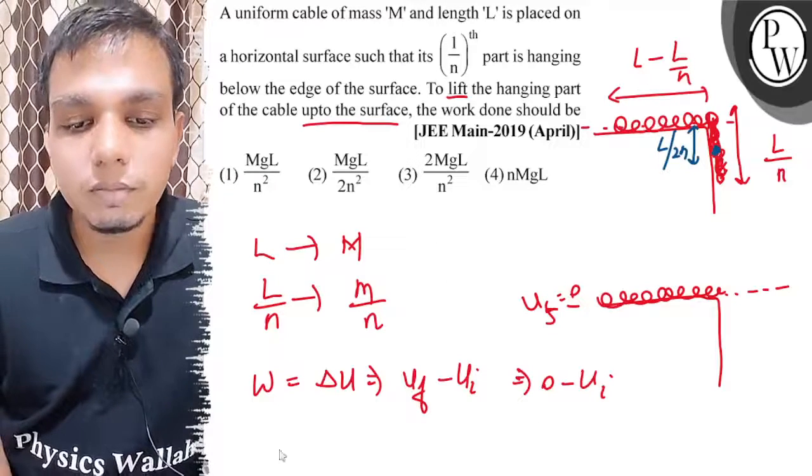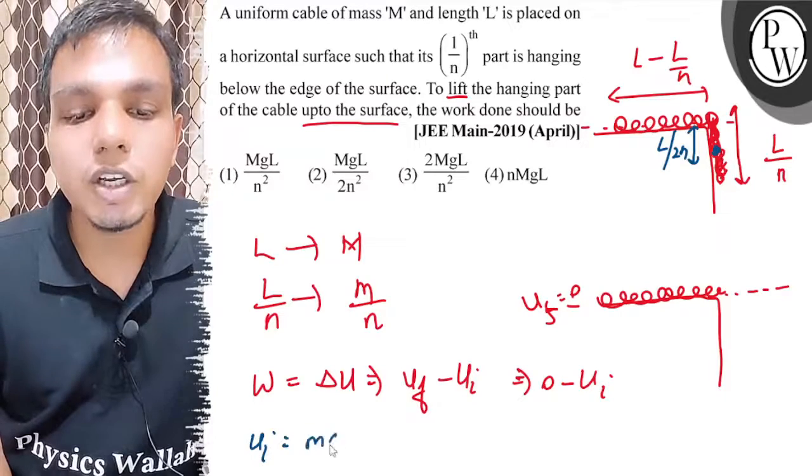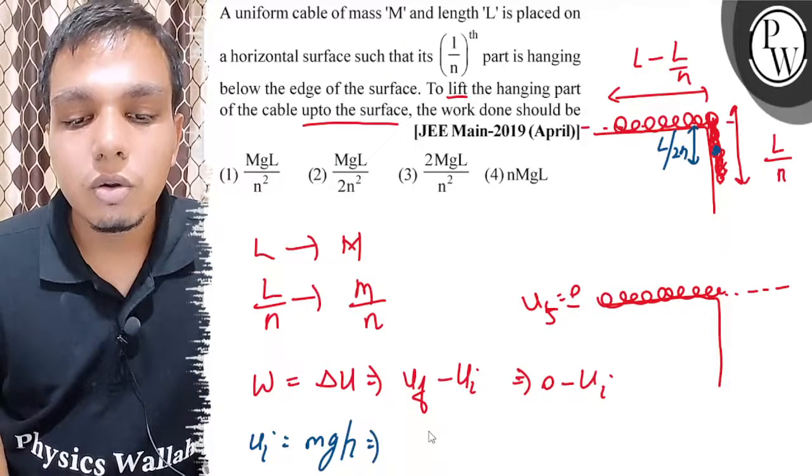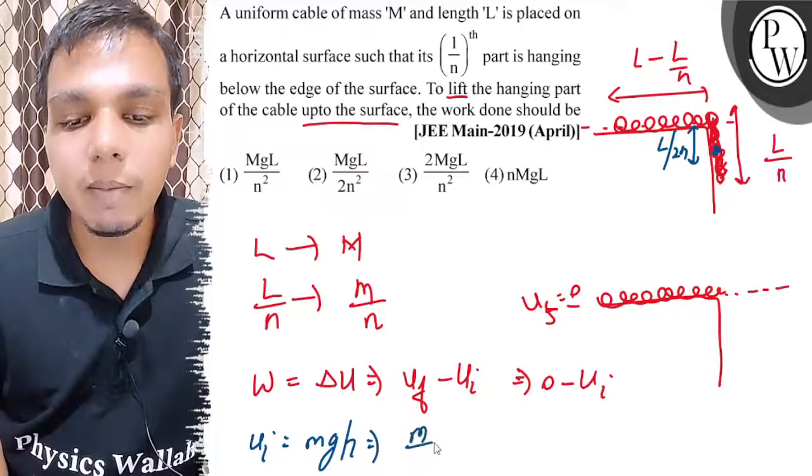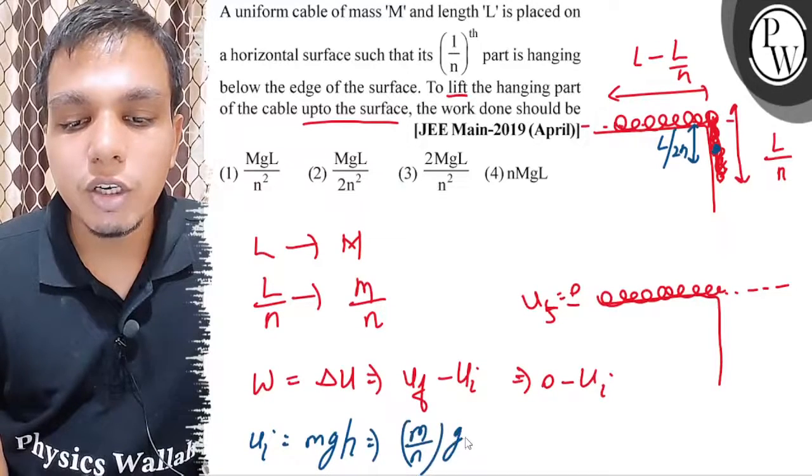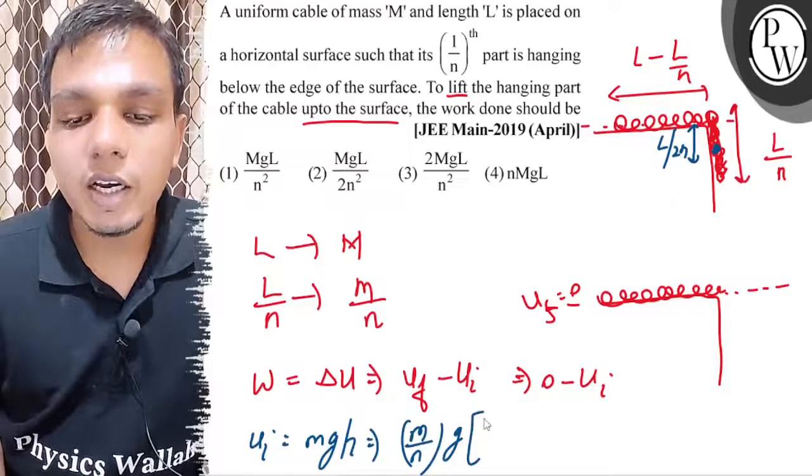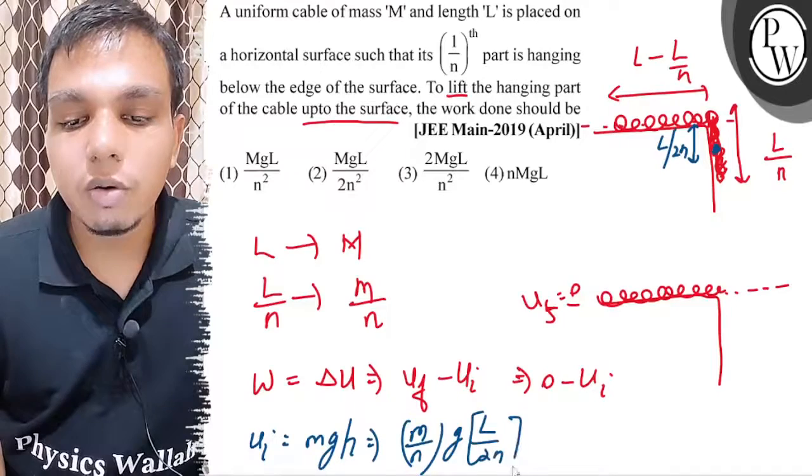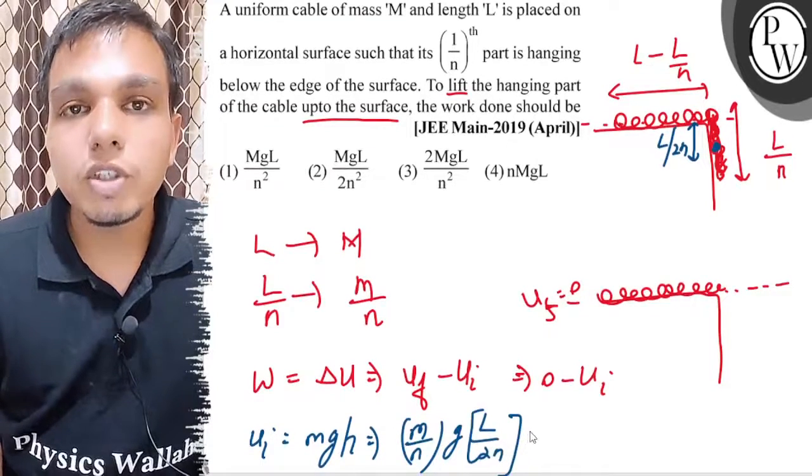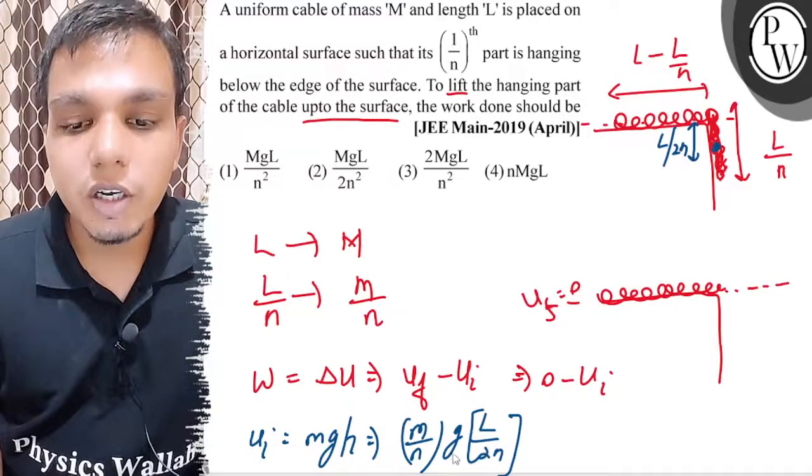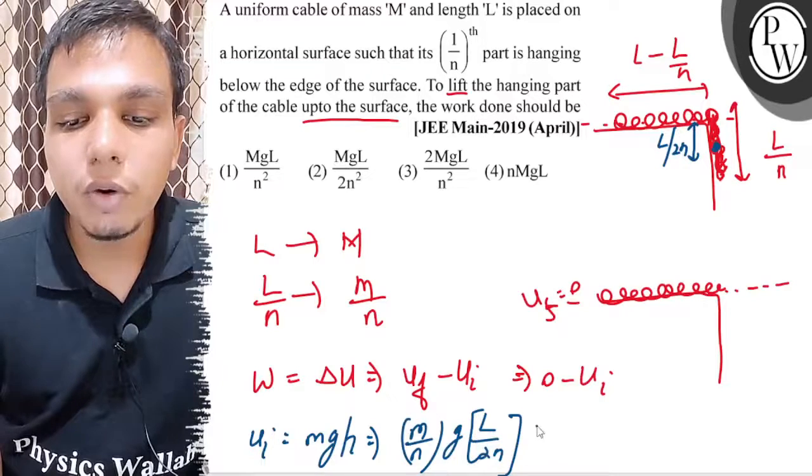If we can talk about U initial, potential energy is MGH. So mass of hanging part is M/N, times G, times H. H is the center of mass position, L/2N. So initial potential energy is MGL divided by 2N squared.